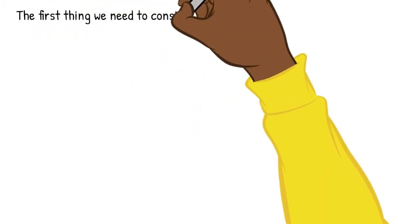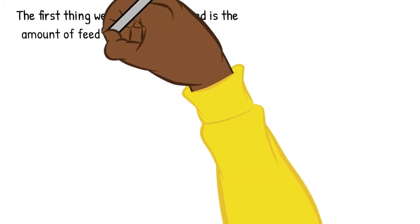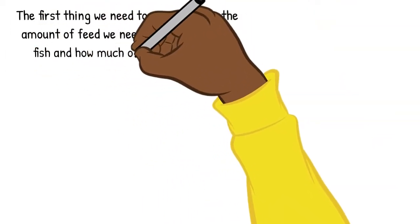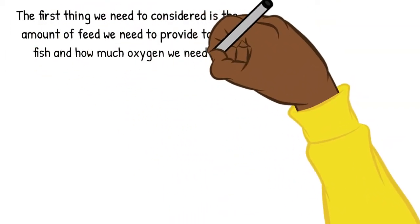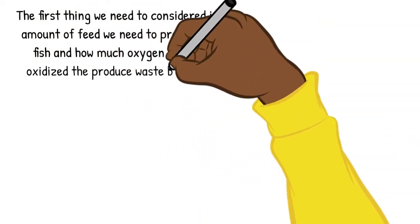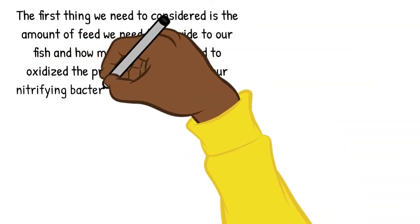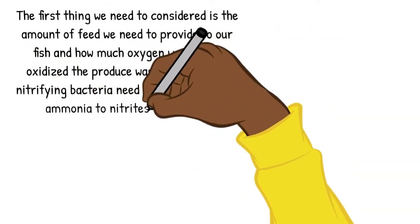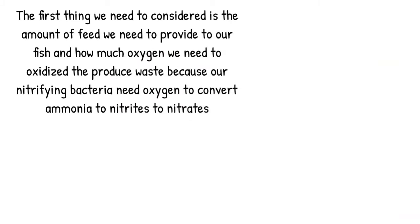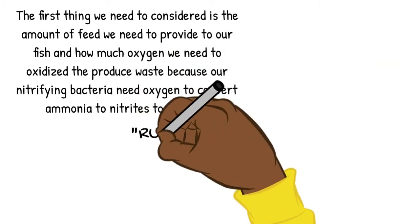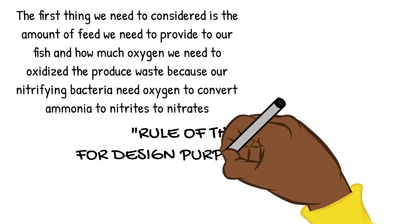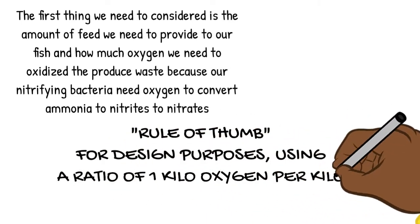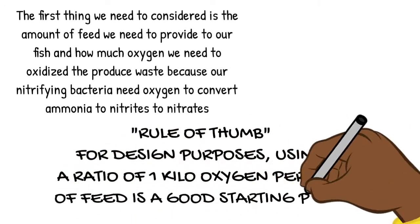The first thing we need to consider is the amount of feed we provide for our fish, and how much oxygen we need to oxidize the produced waste, because our nitrifying bacteria need oxygen to convert ammonia to nitrites or nitrates. As a rule of thumb for design purposes, a ratio of one kilogram of oxygen per kilogram of feed is a good starting point.